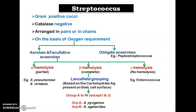An example of obligate anaerobes is Peptostreptococcus. Coming to the aerobes and facultative anaerobes, they grow well in the presence of oxygen. Facultative anaerobes means if there is no oxygen they can convert themselves into anaerobes. These aerobes and facultative anaerobes are again classified on the basis of their hemolytic property.